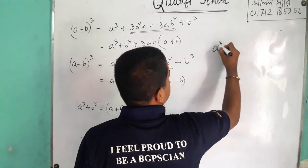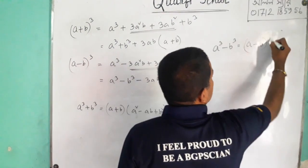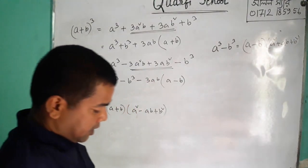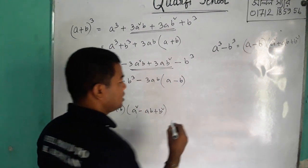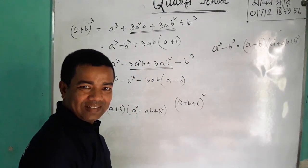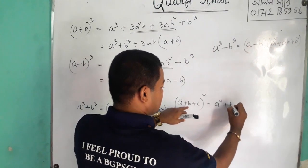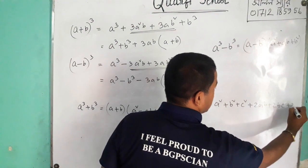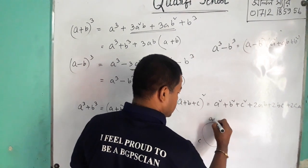A cube minus d, a cube minus d cube, equals a minus b into a square plus ab plus b square. A plus b plus c whole square equals a square plus b square plus c square plus 2ab plus 2bc plus 2ca.